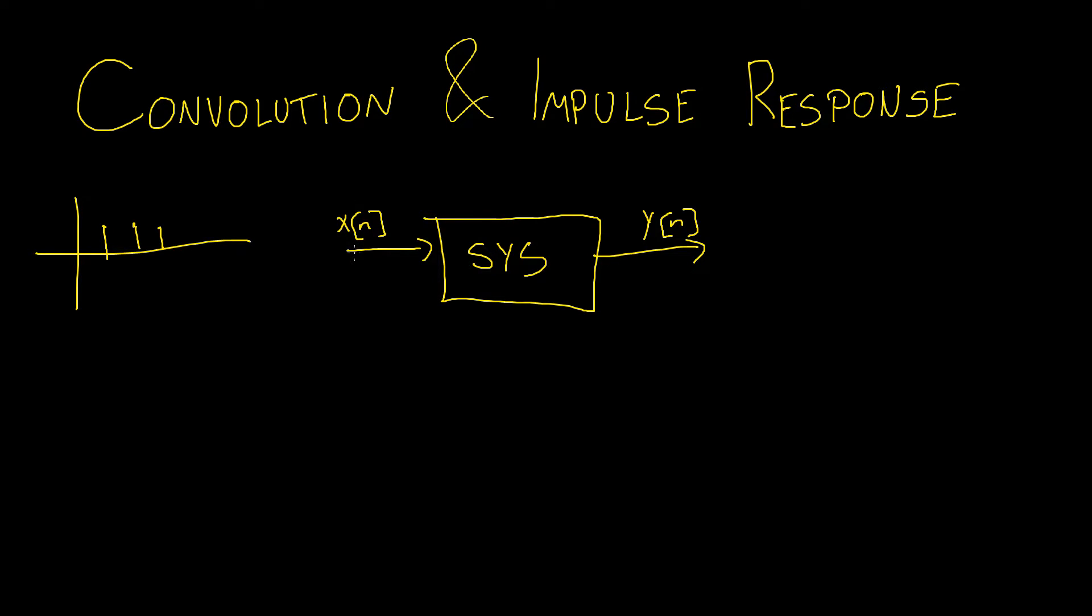So what we do is we calculate the impulse response which is the system's response to a unit impulse. In other words, at time zero we have a pulse of one and then every other time than that is zero and we pass this into our system.